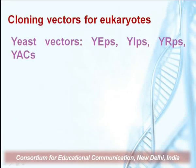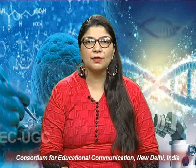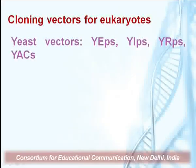For cloning vectors for eukaryotes, we will start with the yeast cloning vectors. There are a variety of yeast cloning vectors which are termed as YEPs, YIPs, YRPs, and YACs. We will take them one by one and talk about their characteristics, properties, and applications.